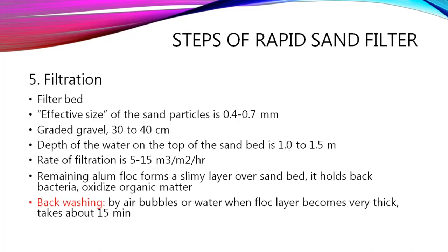After sedimentation, water is sent to the filtration bed. The key difference from slow sand: the flocculation, sedimentation, and coagulation steps happen separately before filtration. In rapid sand, sand particle size is 0.4 to 0.7, gravel is 30 to 40 centimeters, water on top is 1 to 1.5 meters, and the rate of filtration is 5 to 50. Remaining alum flocs form a slimy layer over the sand bed, holding back bacteria and oxidizing organic matter - acting mechanically rather than biologically.